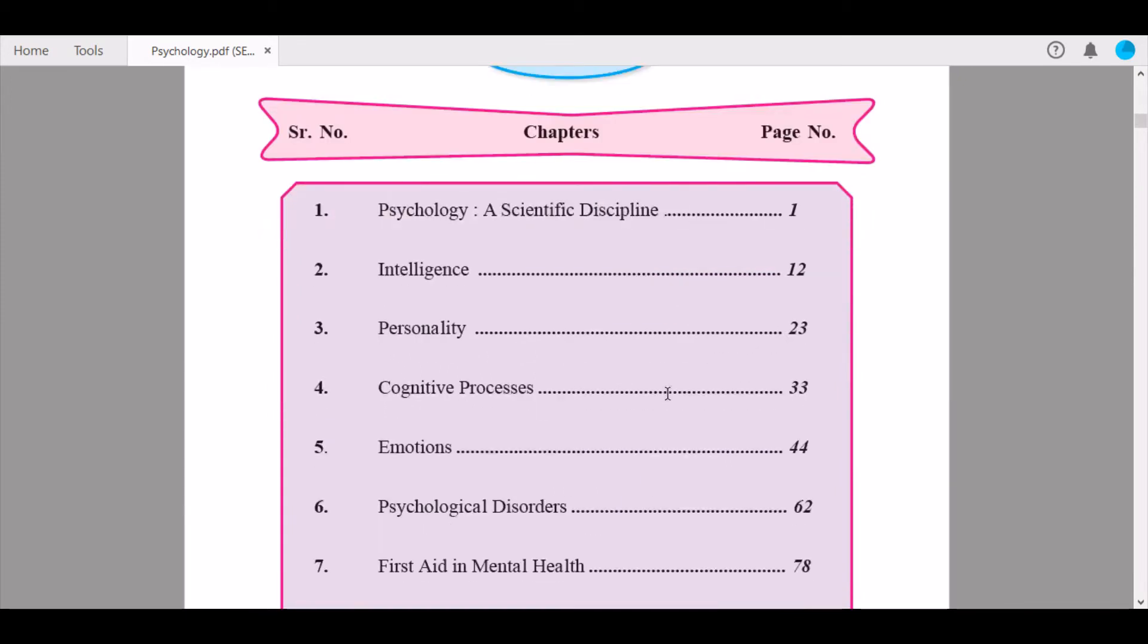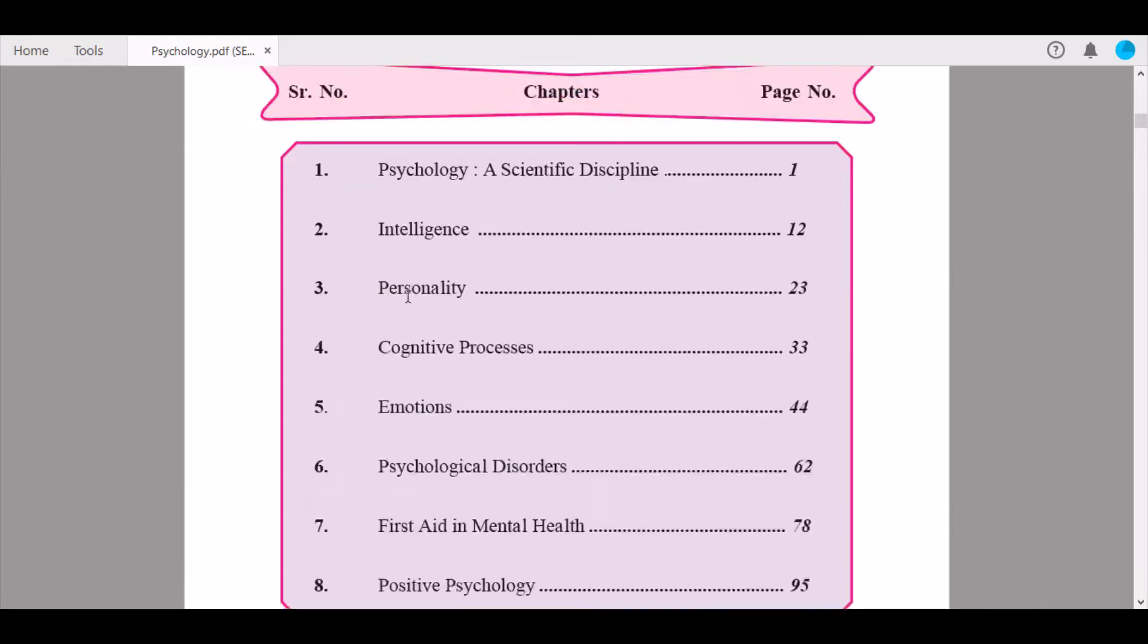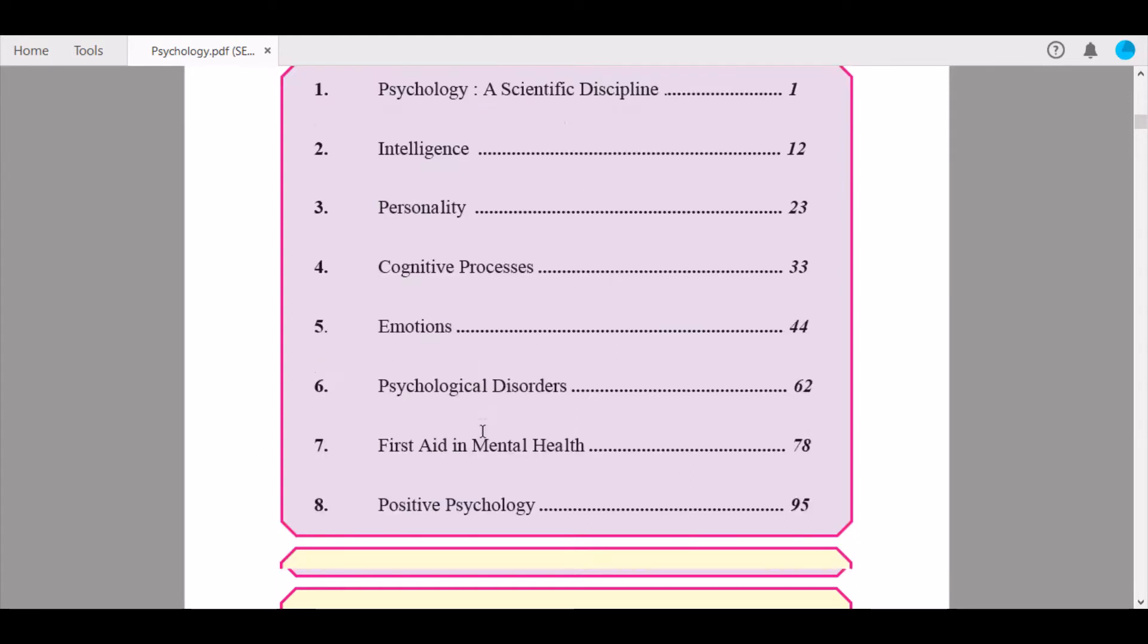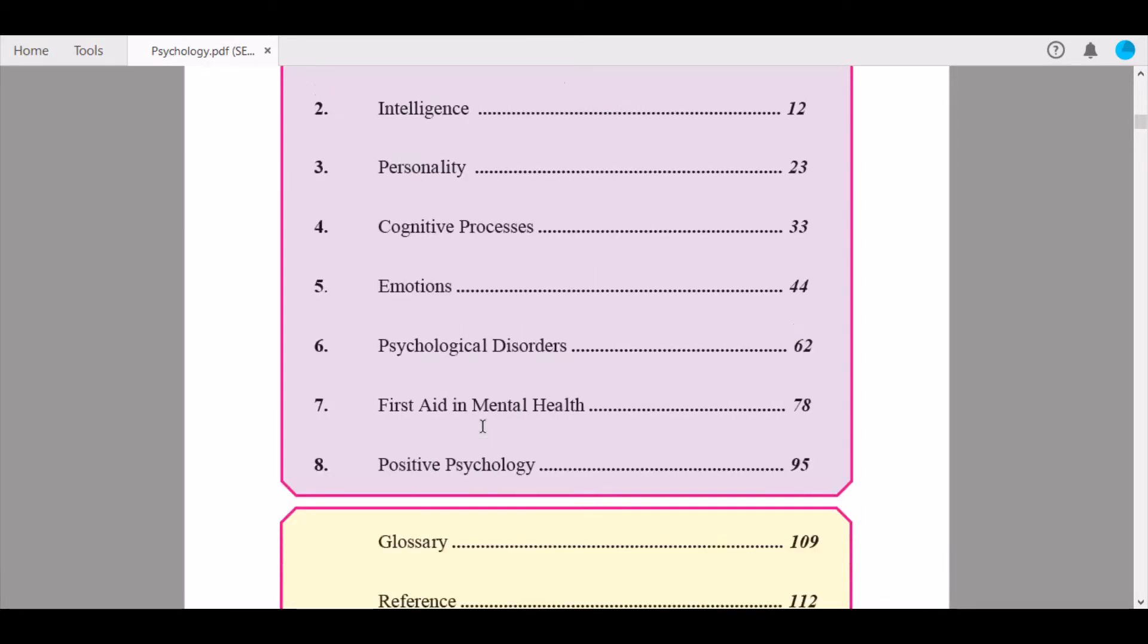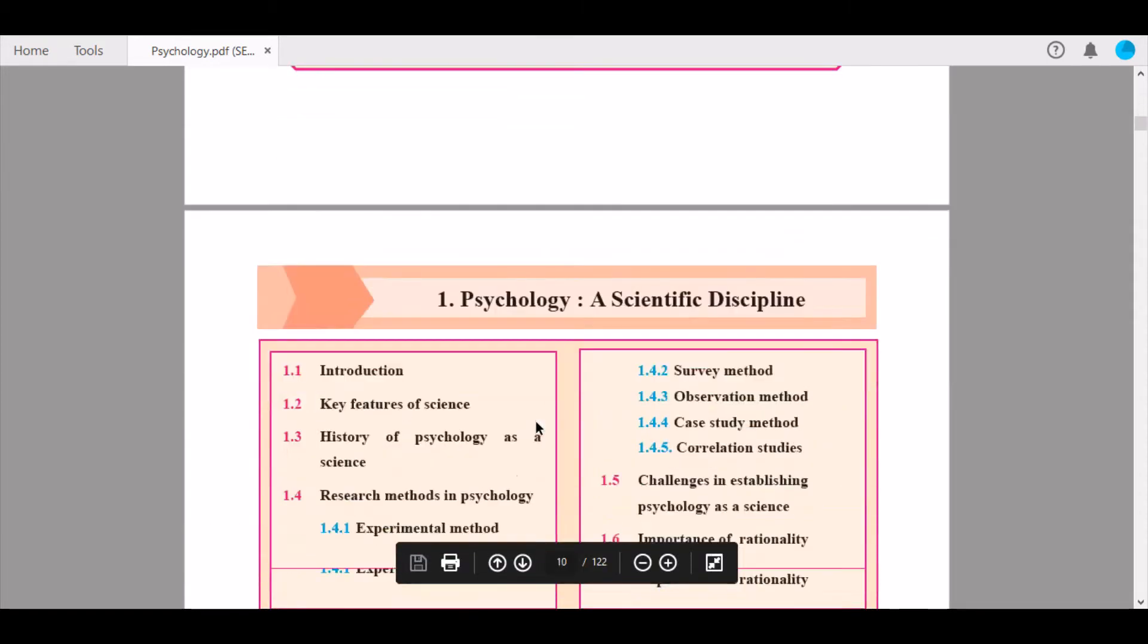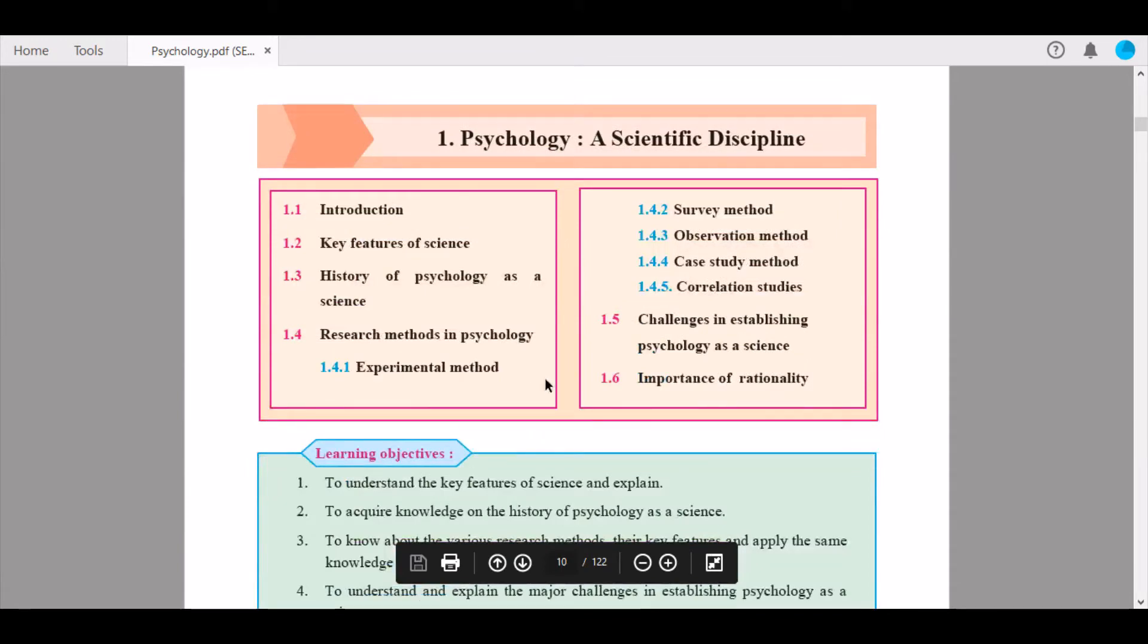Here we get the index showing the different chapters: first one being Psychology as a Scientific Discipline, second Intelligence, third Personality, fourth Cognitive Processes, fifth Emotions, sixth Psychological Disorders, seventh First Aid in Mental Health, and eighth Positive Psychology. Next we have the glossary and reference.